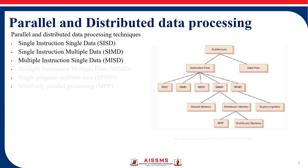The goal of both parallel and distributed processing is to process data more quickly and efficiently by using multiple processors. But the architecture and methods of processing are different for both.